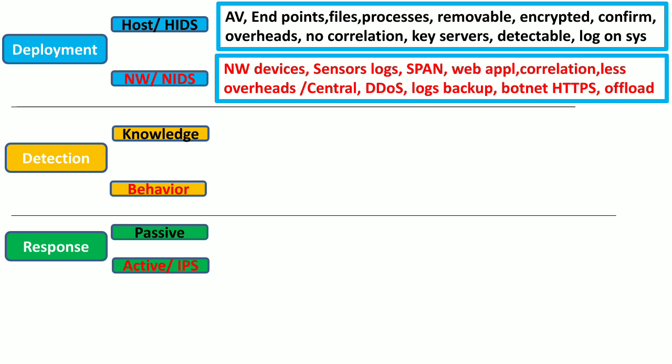The network-based Intrusion Detection System can correlate events and activities happening on other systems, and there are fewer overheads because all processing is performed on a central device. It can also detect denial of service attacks or distributed denial of service attacks over the network. Moreover, it backs up its log data in case the attacker is able to compromise the local logs, so the logs can be restored from the backup data.